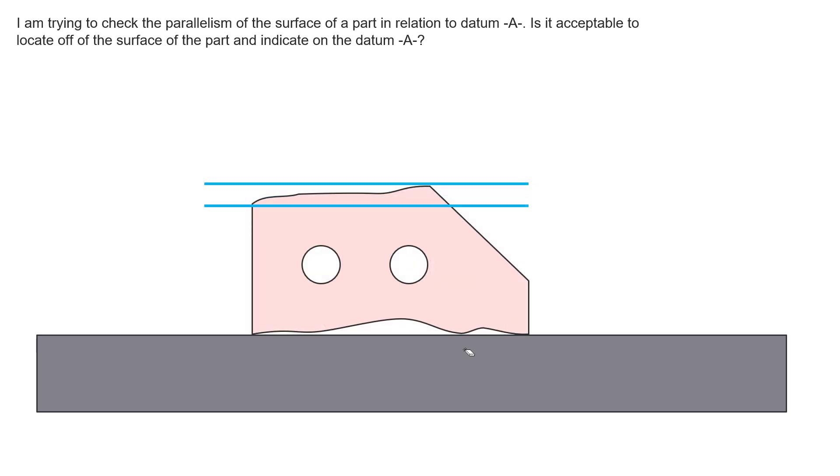A little bit more realistic is you can see that we are controlling the form as well. We might have good orientation error. So again simulating datum A down here, this is datum feature A. Something else will control the flatness of datum feature A hopefully. But we are simulating datum A off of its high points.